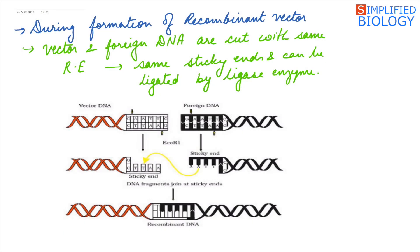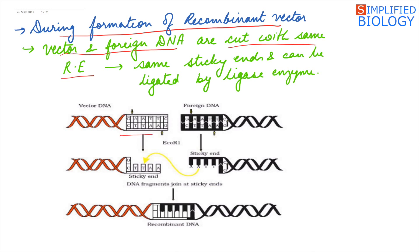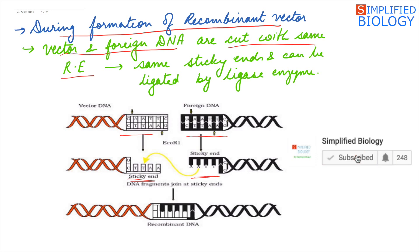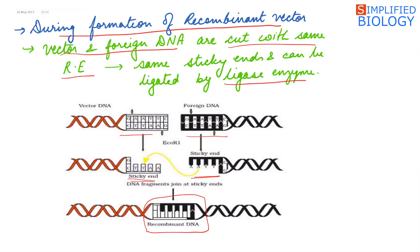During the formation of a recombinant vector, the vector and the foreign DNA are cut with the same restriction endonuclease, so that they will have the same sticky ends. Hence, they can be easily joined to each other by ligase.